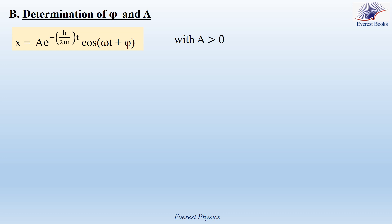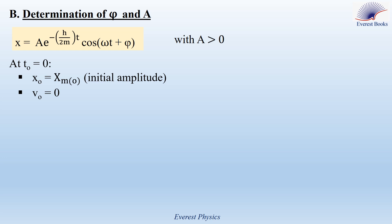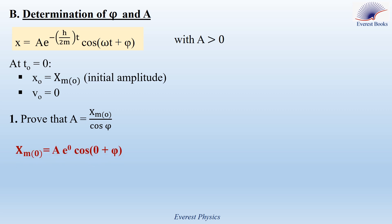Let's move to the second part of the question: determination of φ and a. We have the time equation and the constant a, which is positive. The initial conditions are: at t₀ = 0, x₀ = xm₀ and v₀ = 0. Part 1: prove that a = xm₀/cos φ. Substituting t = 0 into the time equation, the exponential becomes e^0 = 1 and ωt = 0, giving a = xm₀/cos φ. This is equation 1.